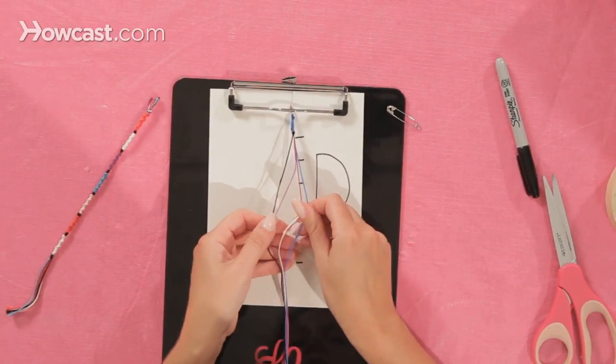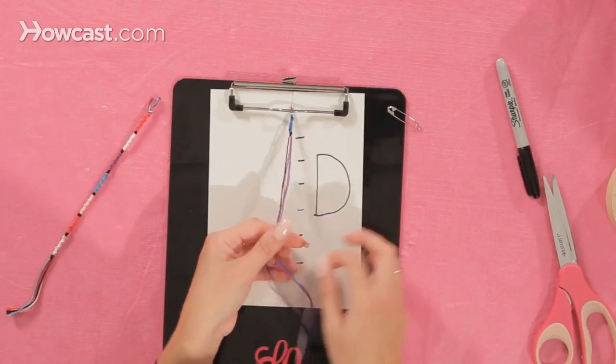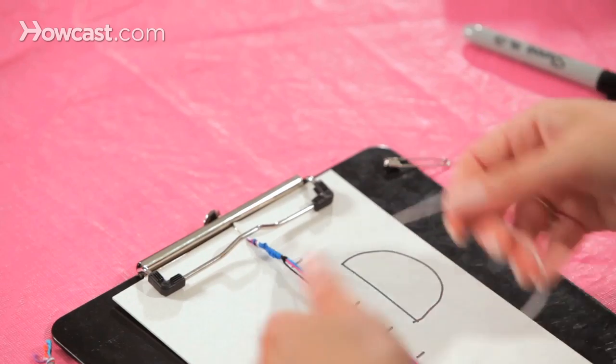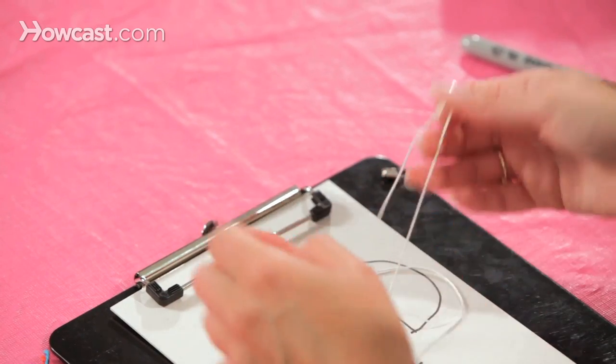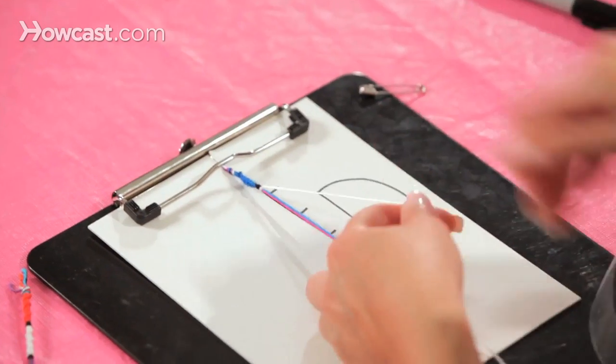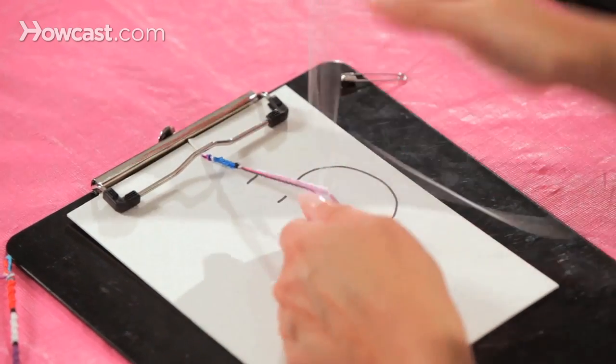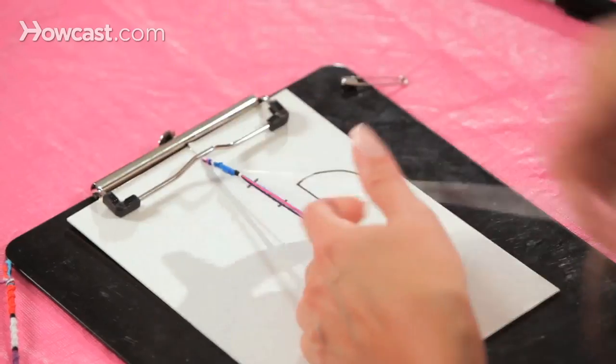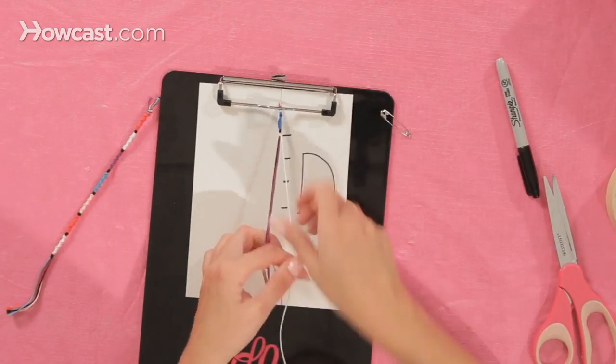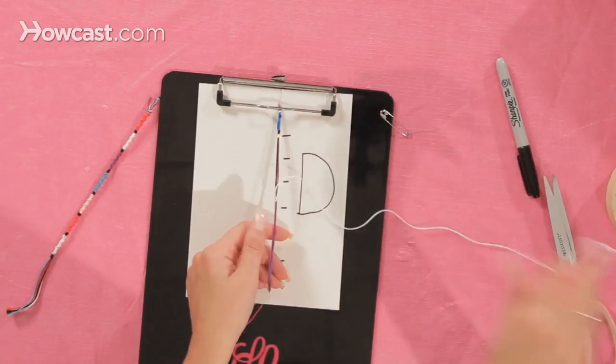And then we'll start with the white. Take out your next color that you're working with, put all the strings back in, and start making D's with the white until you get to the next mark that you made on your board. And again, right before you get to that mark, you're going to do three black stitches to separate your colors. And you keep doing this all the way down until it can fit your wrist.